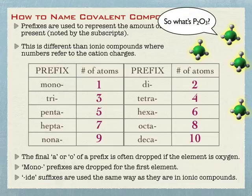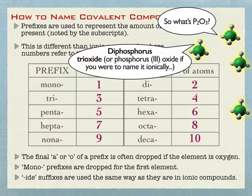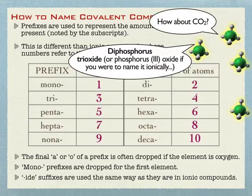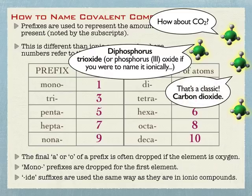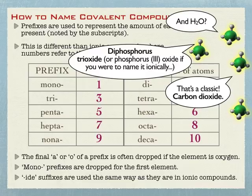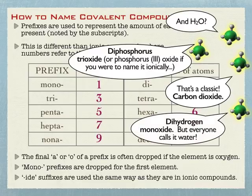For example, P2O3 named covalently — since it's two non-metals — is diphosphorus trioxide. CO2 is carbon dioxide, not monocarbon dioxide, because mono is dropped for the first element. Even water — you might be tempted to call it dihydrogen monoxide, but nobody calls it that. It's just called water.